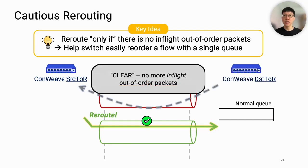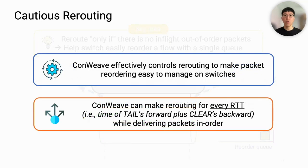After flushing, we send a CLEAR signal to the source, indicating there are no more in-flight out-of-order packets, so we can make a new rerouting decision. Overall, Convive effectively controls rerouting to make packet reordering easy to manage on switches. Remarkably, Convive can make rerouting every RTT — that is, the sum of the TAIL's forward time and the CLEAR's backward time — while delivering packets in order.